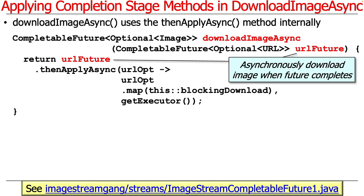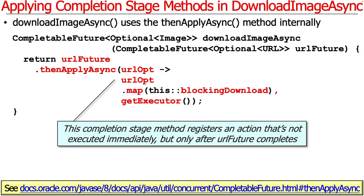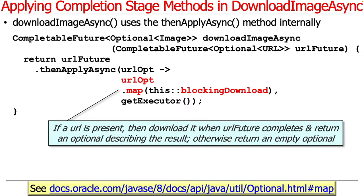As you can see here, the DownloadImageAsync method takes a parameter called URLFuture, which is a CompletableFuture to an Optional URL. When that CompletableFuture completes — in other words, once we've figured out whether an image has been cached or not — we then call the thenApplyAsync completion stage method. That registers an action that won't be executed right away, but will only be executed after URLFuture completes. We pass in the getExecutor method, which returns the common fork-join pool in this case.